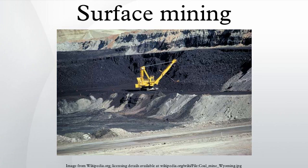Mountaintop removal mining is a form of coal mining that uses explosives to blast overburden off the top of some Appalachian mountains. Excess mining waste or overburden is dumped by large trucks into fills in nearby hollow or valley fills. MTR involves the mass restructuring of earth in order to reach the coal seam as deep as 400 feet below the surface, replacing the original steep landscape with a much flatter topography.